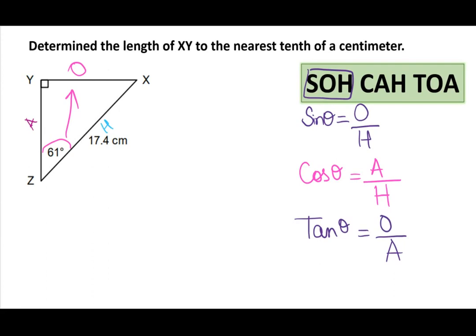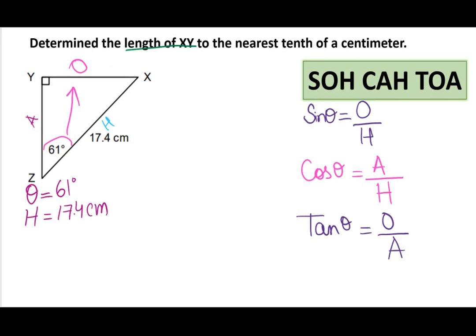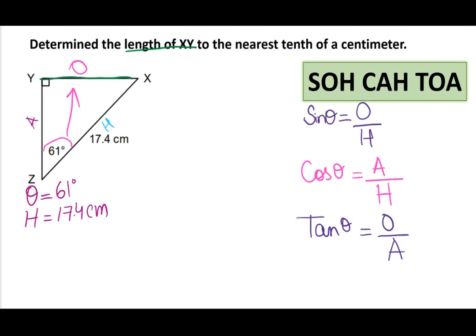Now we have the ratios written down. Let's write down what's given to us: the angle (theta) is 61 degrees, and the hypotenuse is 17.4 centimeters. We need to find the length of XY, which is the opposite side. So we have opposite and hypotenuse — looking at the ratios, we have opposite and hypotenuse in sine, so we will be using sine.